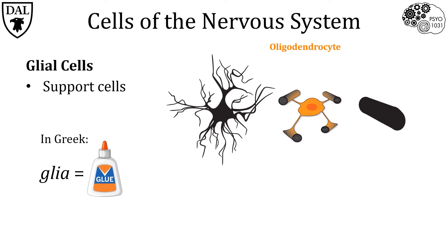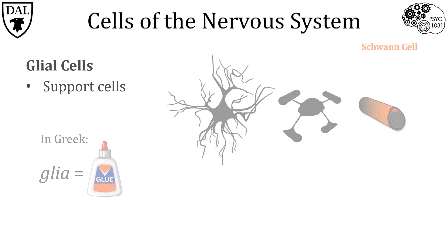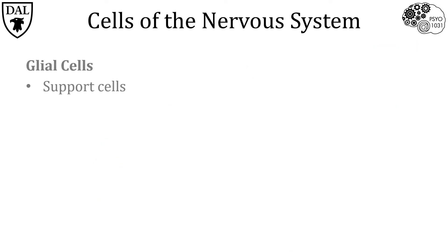Schwann cells serve the same function of wrapping around and insulating neuron axons, but in the peripheral nervous system — so outside the brain and spinal cord. Nerve cells are called neurons, and their job is to receive and send messages to both one another as well as targets all over the body, so they are information processors.